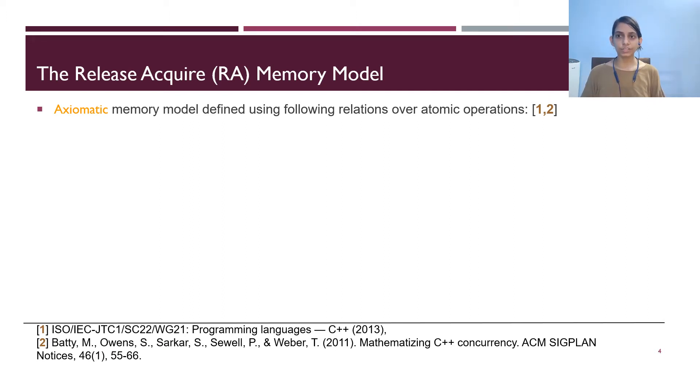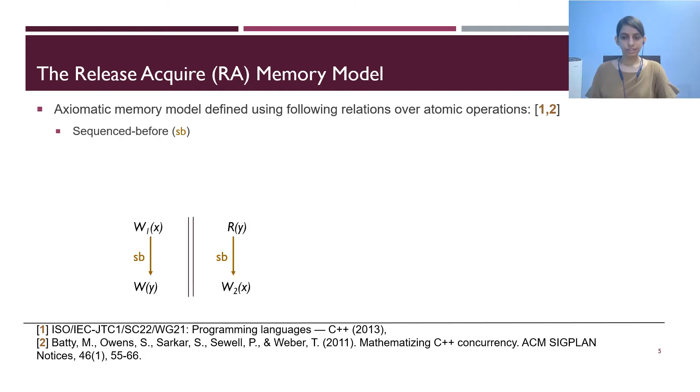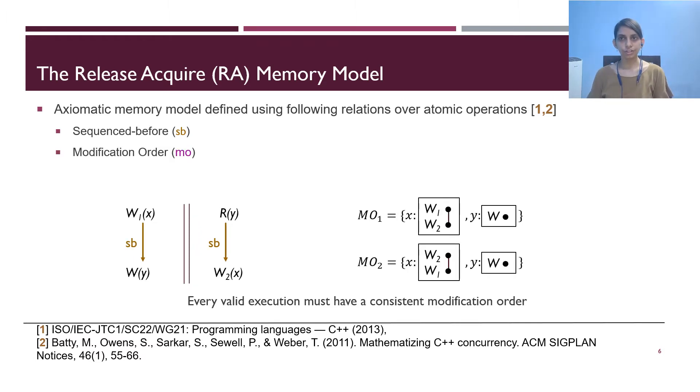The RA Memory Model is defined axiomatically using the following relations. The first relation is sequence before. For now, we can understand sequence before to be similar to program order. The next relation is modification order or MO. Modification order is a total order over the stores of a variable across all threads. In this example, we have two stores of variable x, w1x and w2x. These two can be ordered in two different ways: w1 can be ordered before w2 and w2 can be ordered before w1. Both of these represent a possible MO over variable x if they are consistent with the other relations in the program. We use Hesse diagram to represent modification orders per variable. MO1 and MO2 here represent the possible modification orders across all variables in the program.